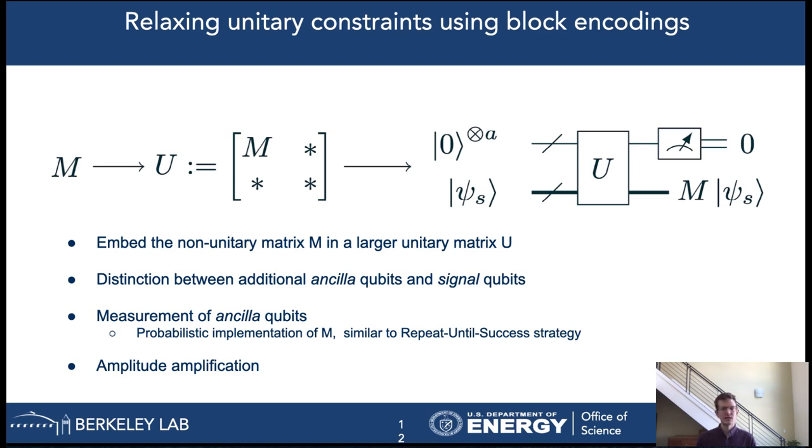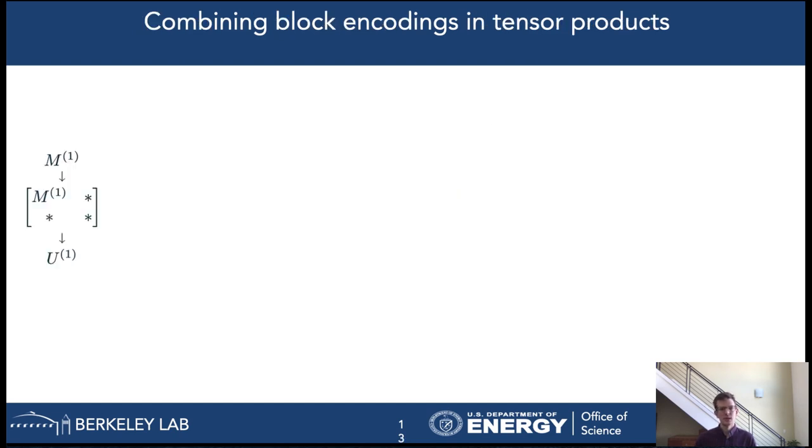Now that we have solved the issue of non-unitarity, we still have to tackle the second issue of the linear combination required in the tensor decomposition. But first, we show how we can effectively and efficiently concatenate block encodings into tensor product, a step that is also required to finish up the algorithm. For quantum gates this is really easy. We just have to concatenate them on different qubits and then the tensor product follows naturally because of the structure in the problem. For block encodings it is slightly more involved but still relatively easy.